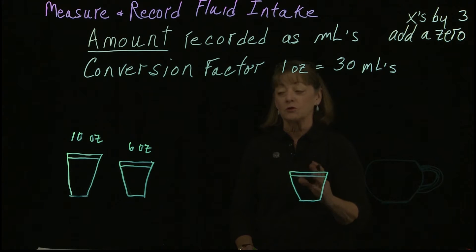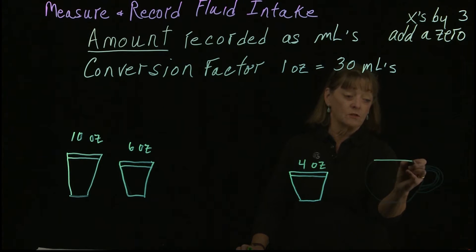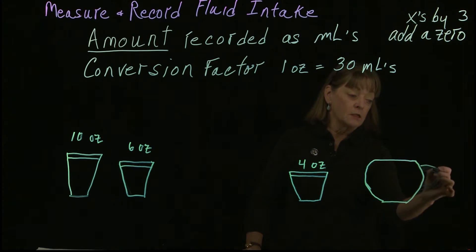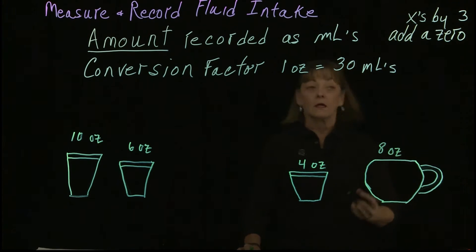So you do have a pretty standard reference. When people are served their meal, they are always served a full serving size. So when they get a 4-ounce glass on their tray, it has 4 ounces of fluid in it. Everything comes out of the serving kitchen as a full serving. So this is an 8-ounce coffee mug or tea.